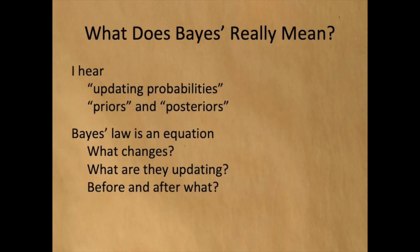He said: I hear terms like updating probabilities and priors and posteriors, but Bayes' law is an equation. What changes? What are they updating? Before and after what?